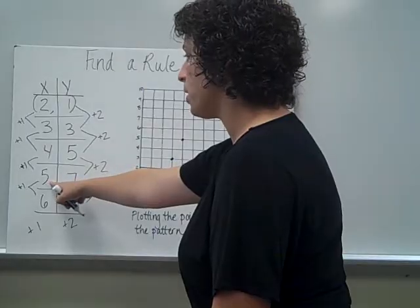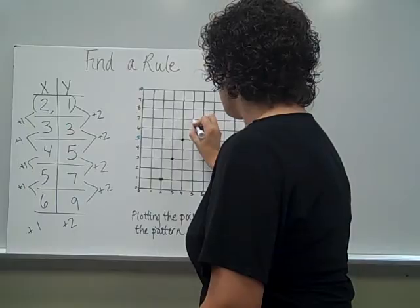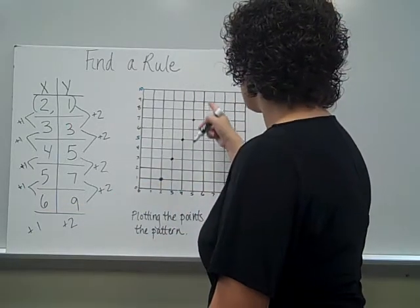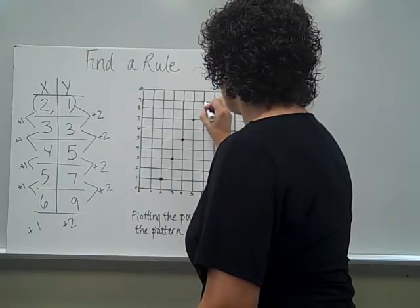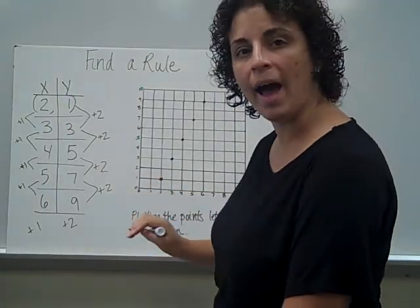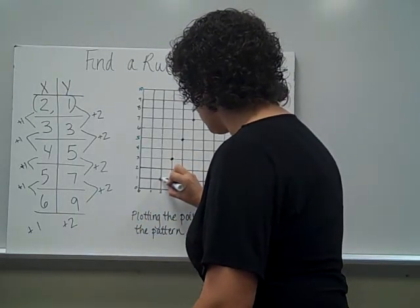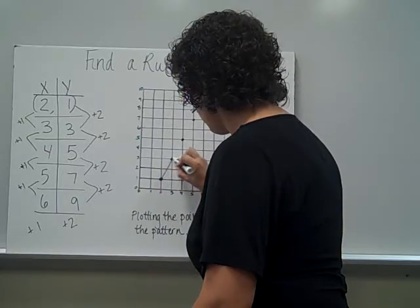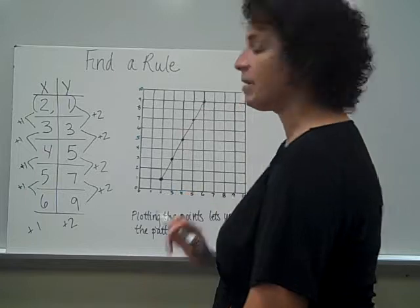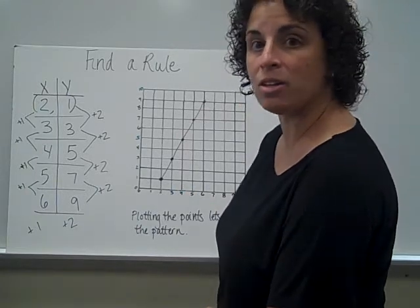My next ordered pair needs to be 5, 7. So 5, 7 would be here. And last, I have 6, 9. So 6 here, 9 here on the y-axis. And what you see is that these points are actually lining up. Let me try to do this neatly. And finally, you can see that when you connect these points, it makes a line because the same thing is happening — the pattern is happening.